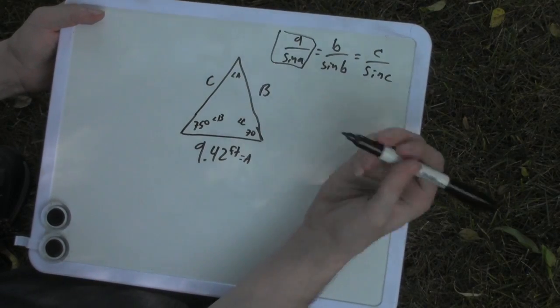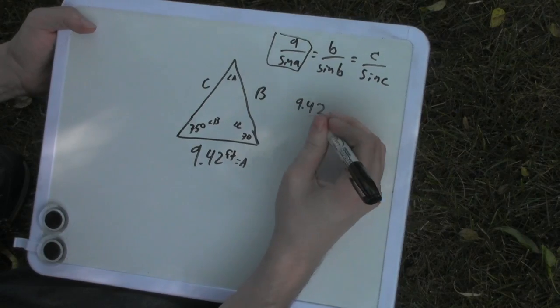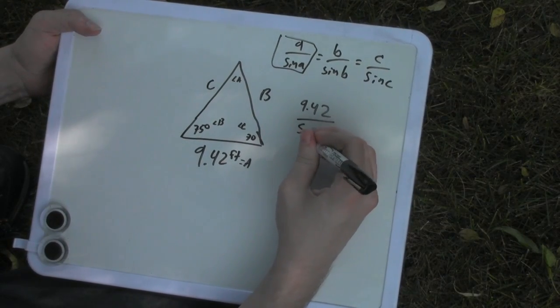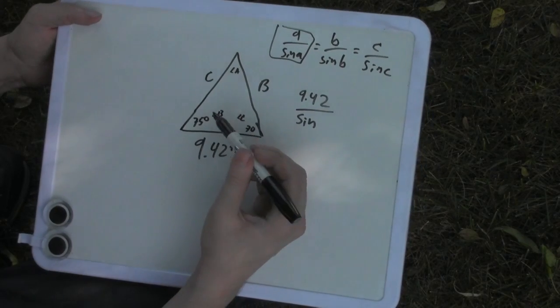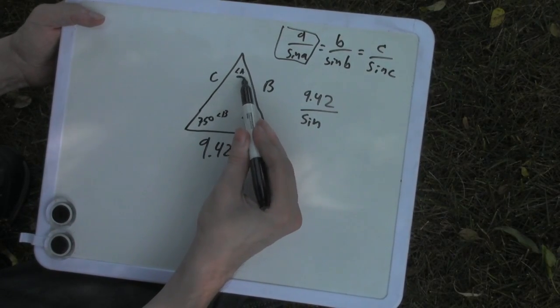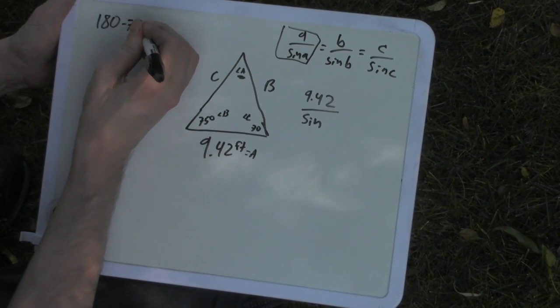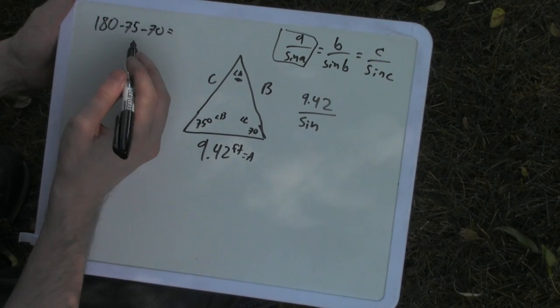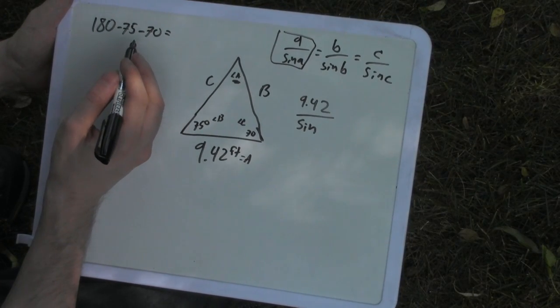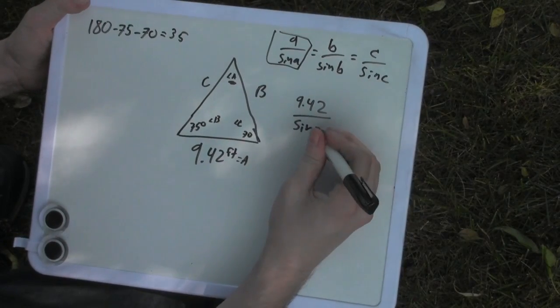So I have 9.42 over sine, and this angle A here we can find that out by just doing 180 minus 75 minus 70. So what does that give us? 145, 35. So we know that angle A is 35 degrees.